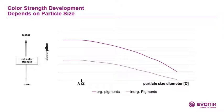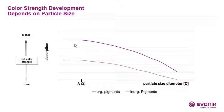Absorption and pigment particles also have a relation, as you can see here — particle size is very important. The smaller the particle size, the higher the absorption. When you look at the screen, you can see we reach a certain level where there is no more absorption, so forming smaller particle size does not give higher color strength. Organic pigments give higher absorption, meaning higher color strength, than inorganic pigments.